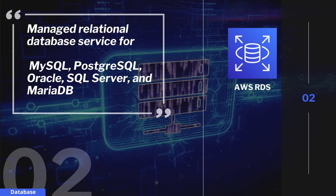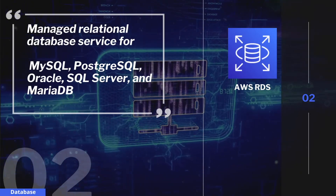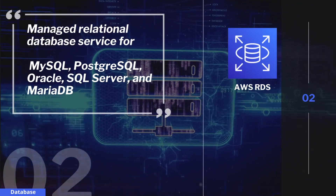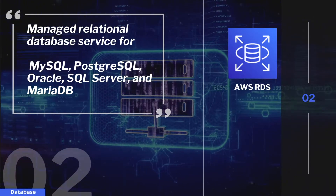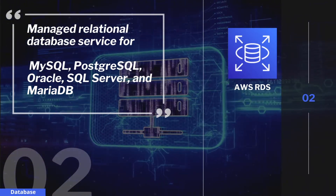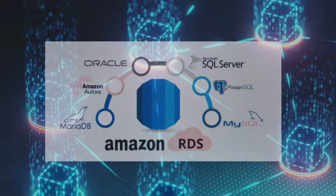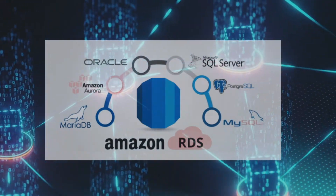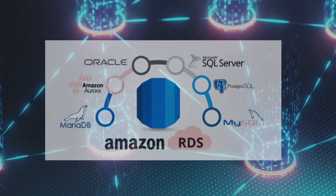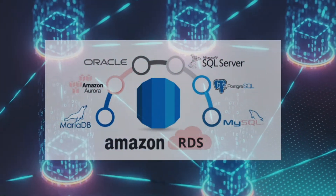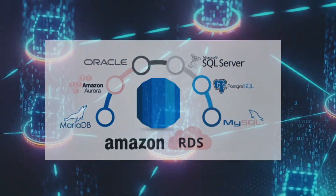Next on the list is Amazon RDS. It's a managed relational database in the cloud. It takes care of hardware provisioning, database setup, patching, and backup. Amazon RDS supports various database engines like Amazon Aurora, PostgreSQL, MySQL, Microsoft SQL Server, and Oracle Database.